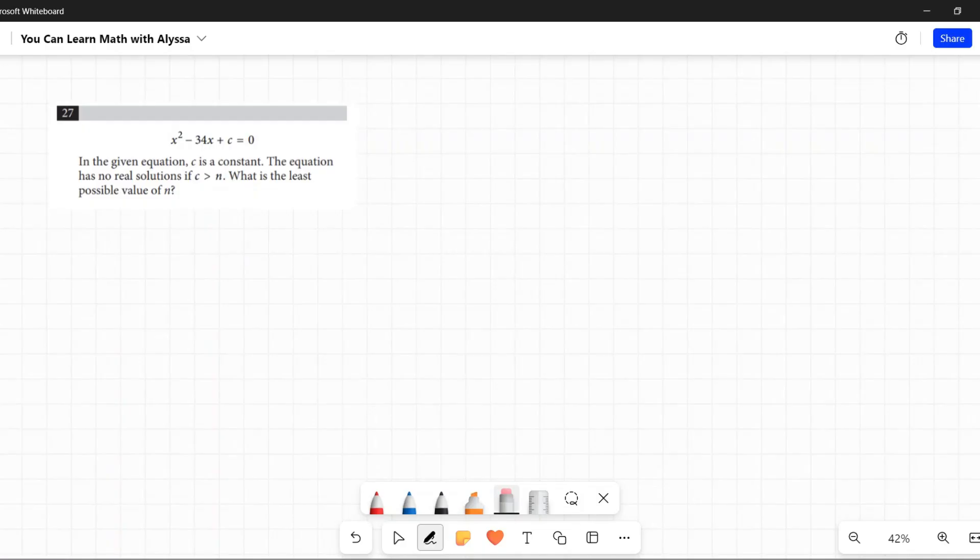Number 27: x² - 34x + c = 0. In the given equation, c is a constant. The equation has no real solutions if c is greater than n. What is the least possible value of n?